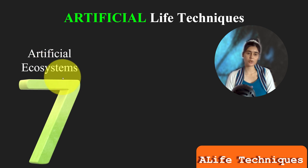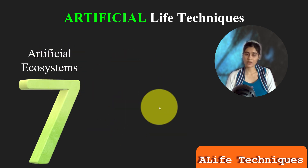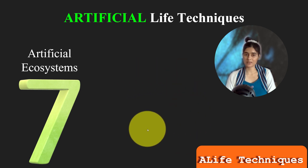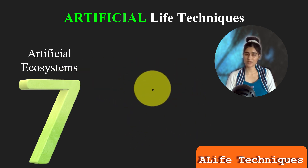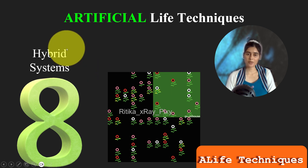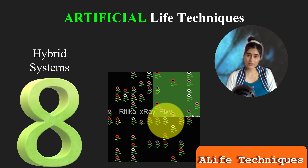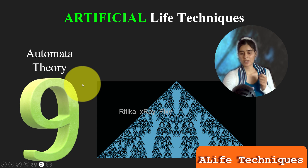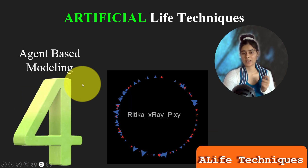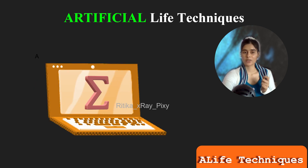Seventh, artificial life researchers create artificial ecosystems with artificial organisms that interact with each other within those ecosystems. Eighth, hybrid systems combine different artificial life techniques to create more complex simulations. Finally, there is automata theory. All of these artificial life techniques will be discussed in upcoming videos with more details and examples.